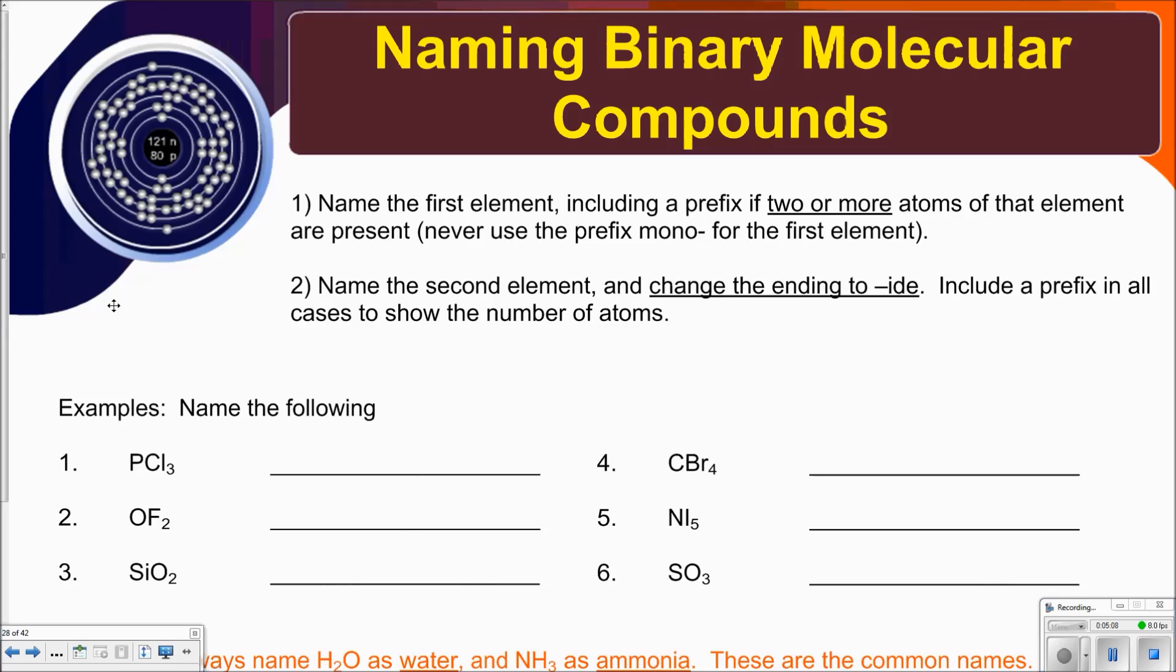For example, number one. This, there's one phosphorus, so I'm just going to write out phosphorus. Be careful to spell it correctly. A lot of kids misspelled these on their quizzes. So phosphorus, and then I notice that there's three chlorines.